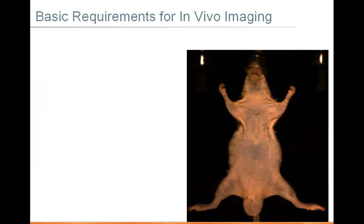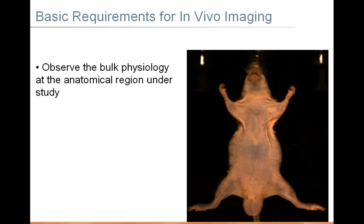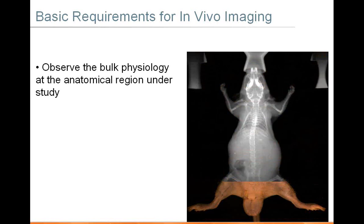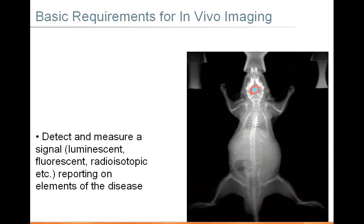At CareStream Molecular Imaging, all of our systems are designed such that you have two things going on in any given instrument. One is the ability to observe and study the physiology or anatomy in your subject, whether by reflectance imaging or x-ray imaging. You also want to be able to detect a functional signal — utilizing fluorescent, luminescent, or radioisotopic imaging capabilities to track a molecular event in vivo, see where it's occurring, and how it changes over time.